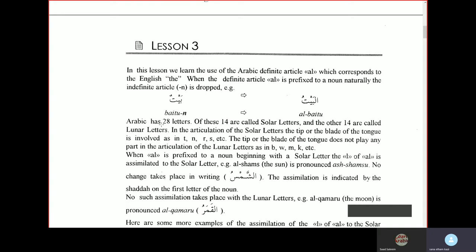Arabic has 28 letters. Of these, 14 letters are called solar letters and the other 14 are called lunar letters. In the articulation of the solar letters, the tip or the blade of the tongue is involved, as in ta, na, ra, sa, etc.